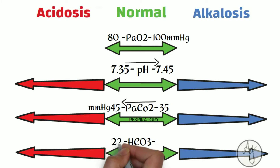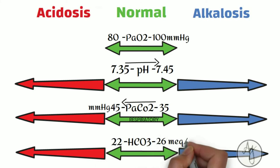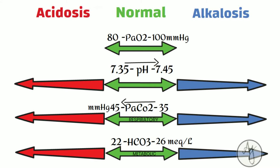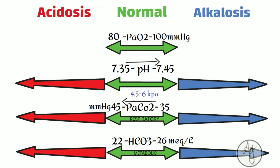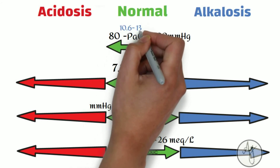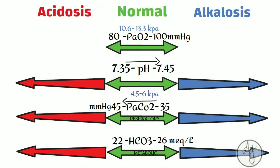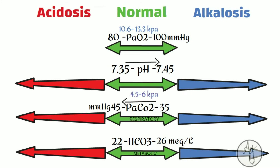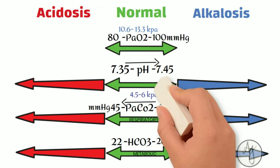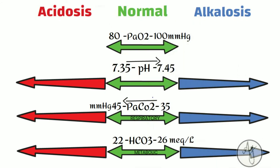Sometimes in certain exams and other countries like the UK, the carbon dioxide and oxygen values may be given in kilopascals. In kilopascals, the normal carbon dioxide is between 4.5 to 6 and oxygen is between 10.6 to 13.3. For the ease of this lecture, I will be speaking only about millimeters of mercury but will put the kilopascals in brackets.